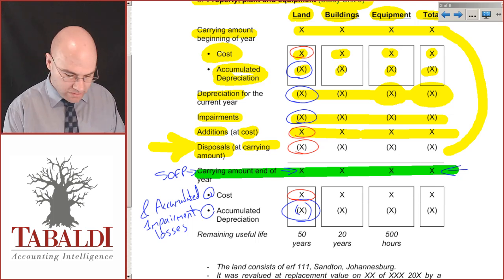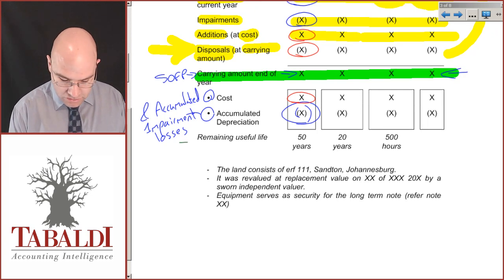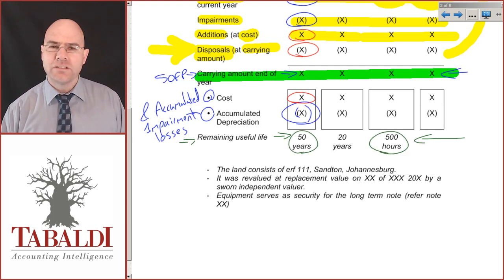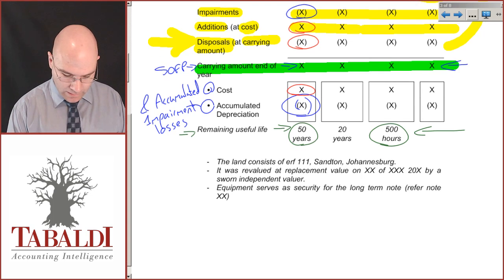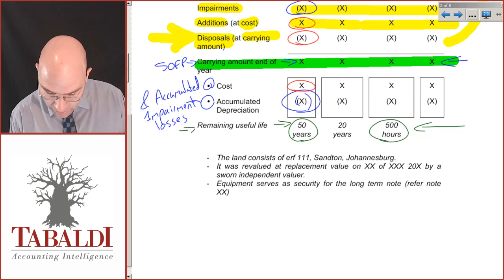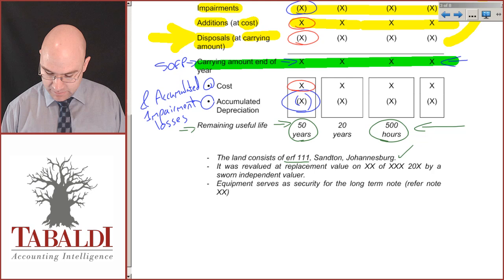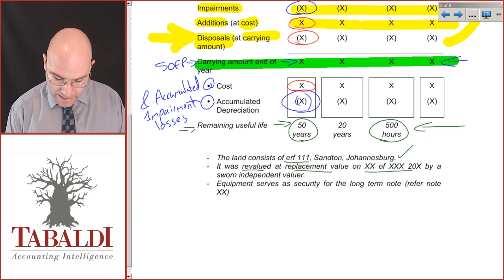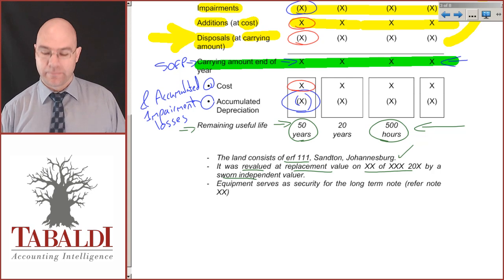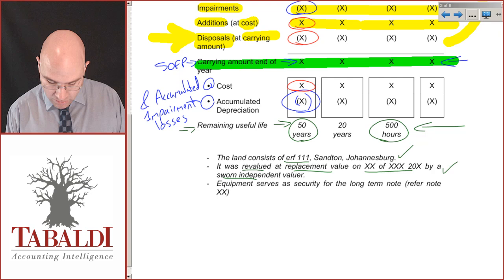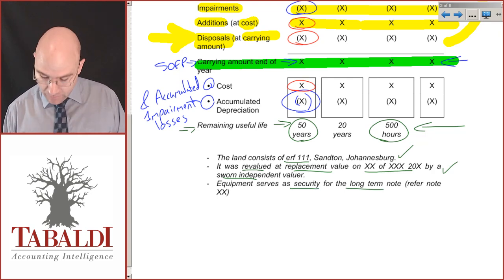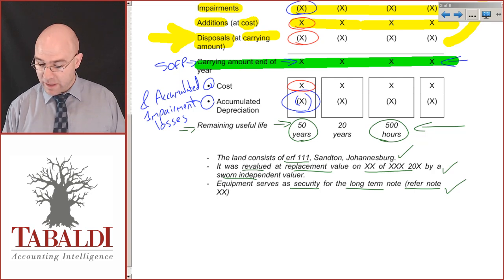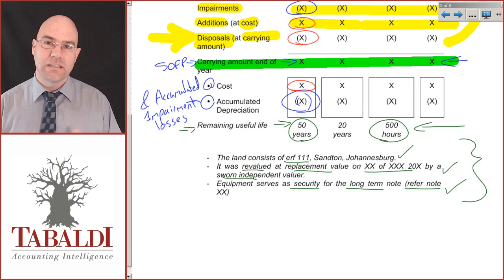What the standards also require is disclosure of the remaining useful life for all individual assets — either in years, hours, or units of production. For land, you must state the erf number, the standard, and the address — usually one mark, nice and easy. If it was revalued, you must state how it was revalued, on which date, and whether it was done by a sworn independent evaluator — one mark. If any items serve as security for debt, make a note of the security and refer to the note on the financial liability. Students always forget those bottom disclosures, but they're two or three of the easiest marks in the entire paper.